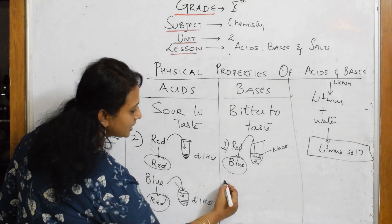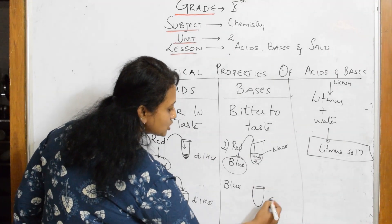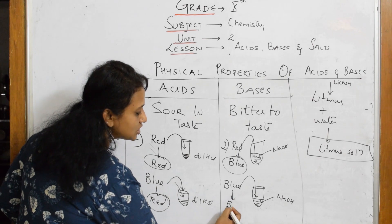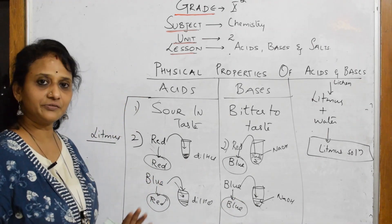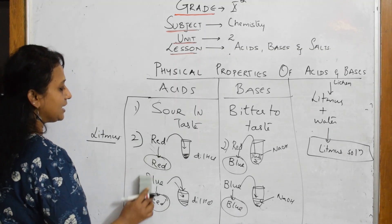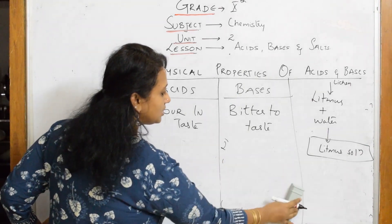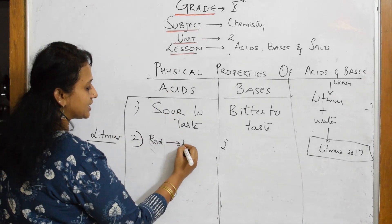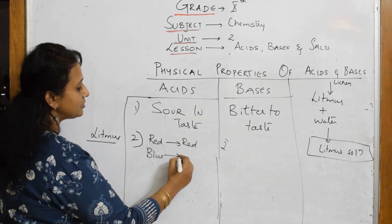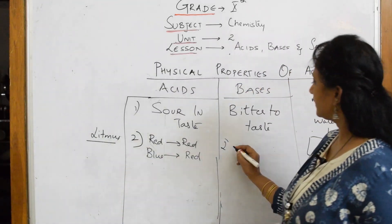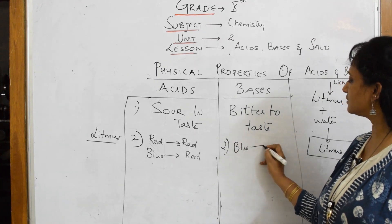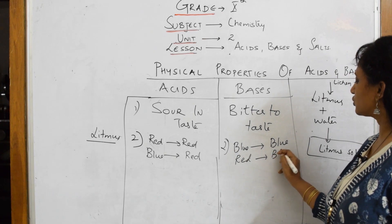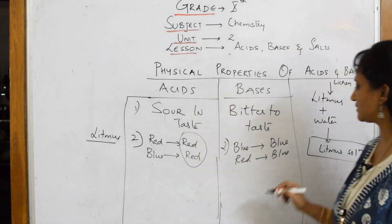Now take a blue litmus paper and dip it into sodium hydroxide — in bases, blue litmus paper remains blue. So the color of the base is blue. To summarize the litmus test: in acids, red litmus stays red and blue litmus turns red. In bases, blue litmus stays blue and red litmus turns blue. The color of acids is red; the color of bases is blue.